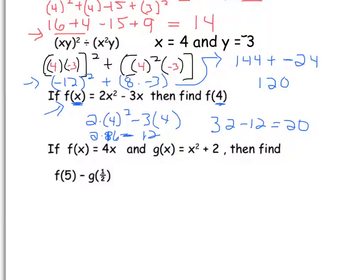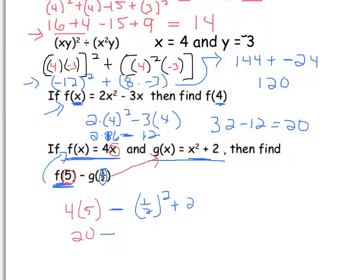This last one is a little bit more complicated. It's saying if the function of f is 4x, and the function of g is x squared plus 2, then find f of 5 minus g of 1 half. So we have to do multiple steps here. We have to find this one, and then we have to find this one, and then we have to subtract. So I'm going to do f of 5 first. That just means 4 times 5, which is 20. So all we did was take this 5 and plug it in for x. Now I'm going to take the 1 half and plug it in over here. Minus 1 half squared plus 2. 1 half squared, 1 half times 1 half is 1 fourth, plus 2. So now I have 20 minus 2 and 1 fourth. So if I was subtracting that, 20 minus 2 is 18, minus another fourth is 17 and 3 fourths.